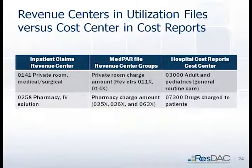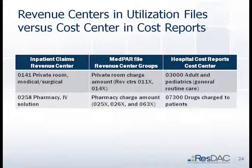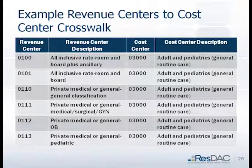For example, in the inpatient claim file you might see revenue center 0141 — private room medical surgical — which MedPAR groups as a private room charge. The closest match in the hospital cost report would be adult and pediatrics, cost center 03000. Similarly, for pharmacy revenue center 0258 in the claims, the hospital cost report equivalent I selected was drugs charged to patients. You need to look at revenue centers and cost centers and develop your own mapping; a more detailed table showing revenue centers and their potential cost center counterparts is provided.